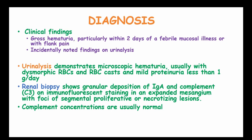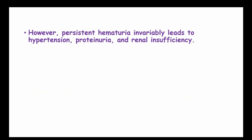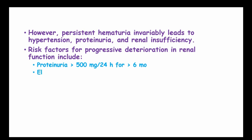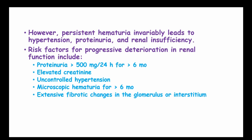Complement concentrations are usually normal, and plasma IgA concentration may be elevated in some patients. However, persistent hematuria invariably relates to hypertension, proteinuria, and renal insufficiency. The risk factors for progressive deterioration of renal function are proteinuria of more than 500 mg in 24 hours for over 6 months, elevated creatinine levels, uncontrolled hypertension, microscopic hematuria for more than 6 months, and extensive fibrotic changes in the glomerulus or interstitium on biopsy.